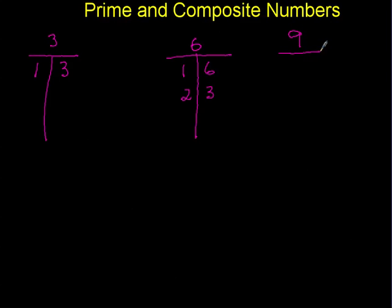We could use 9: 1 and 9, 1 times 9 is 9, 3 times 3 is 9. So 9, since there's a repeat there, 9 has three factors. It's more than two factors, so that means it's composite.